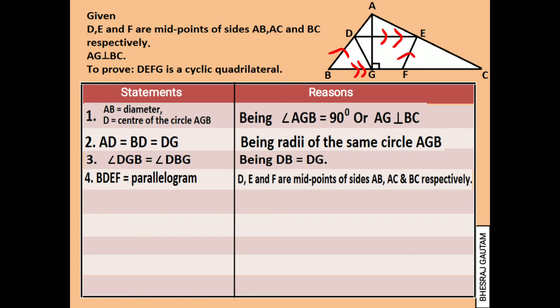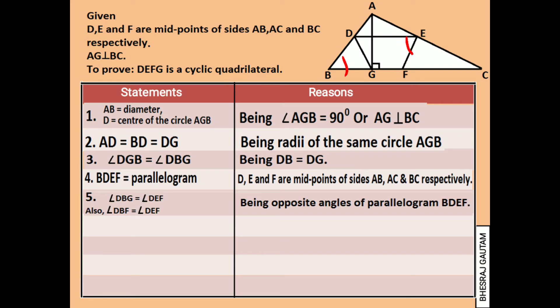Now from statement 4, angle DBG can be written equal to angle DEF — that is, angle DBF equals angle DEF — as they are the opposite angles of a parallelogram, which always remain equal.